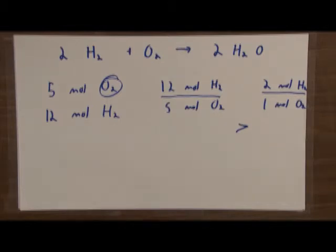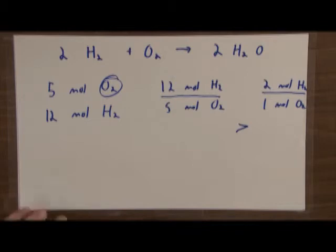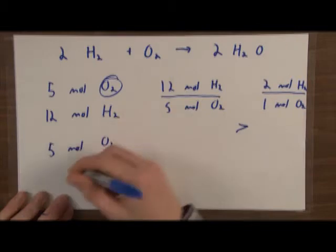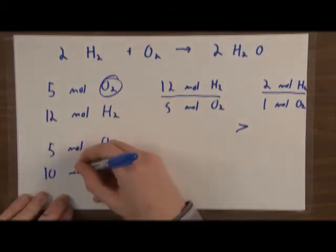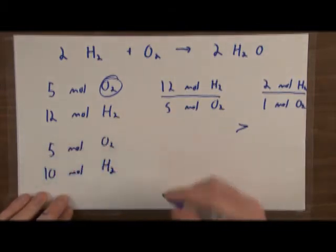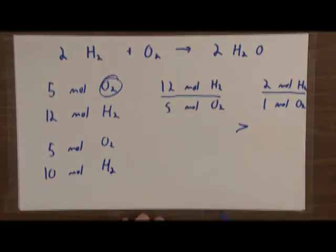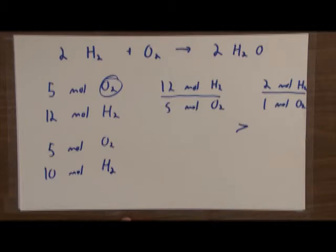We can also have a case where neither one is the limiting reagent — they run out at the same time. For example, staying with five moles of O2 and 10 moles of H2: 10 over 5 equals 2 over 1, so the reactants are in the exact molar ratio. Neither one is going to limit the reaction; they're going to run out at the same time.